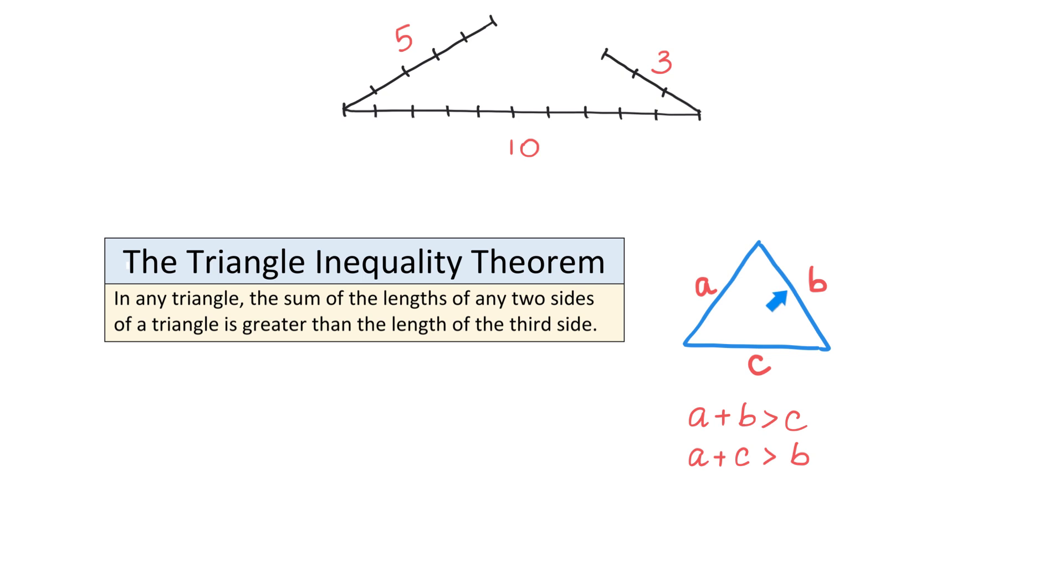Also, B plus C has to be greater than A. Then we will write that B plus C is greater than A. This is what this theorem tells us. In any triangle, the sum of the lengths of any two sides of a triangle is greater than the lengths of the third side.